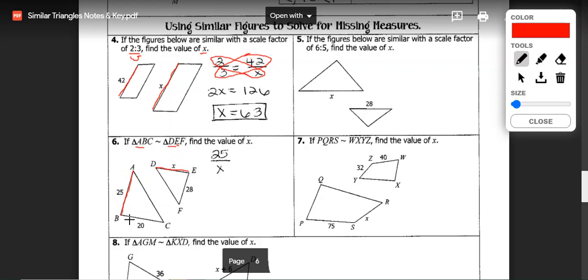We have 25 and X which we know correspond because AB are the first two letters and DE are the first two letters. So these two sides must correspond. And we can use the next two.